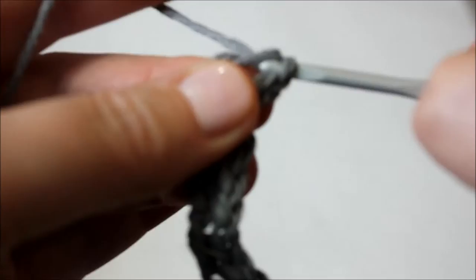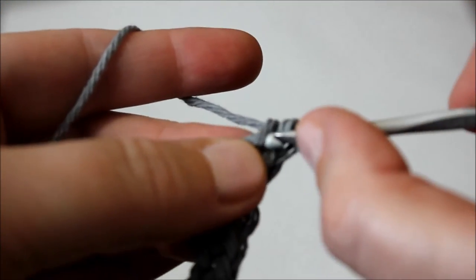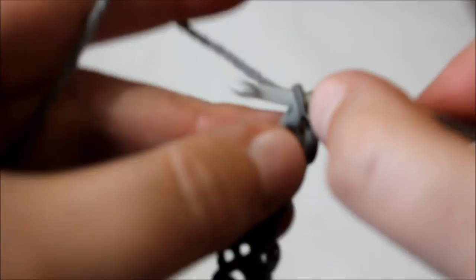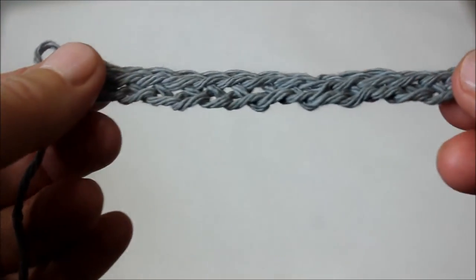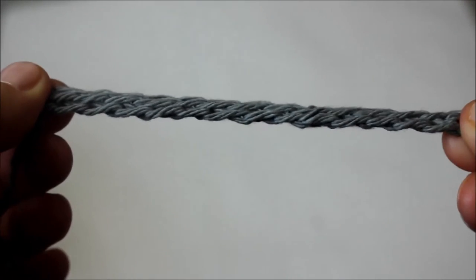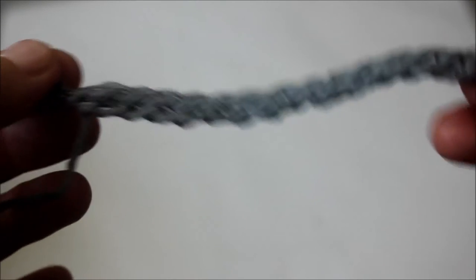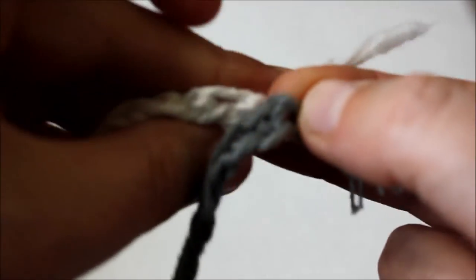I hope this tutorial gives you an idea how to start a dishcloth or a baby blanket with your project. Instead of chaining, you can use these methods. You can't see anything, it looks like a chain stitch. Here we go. So this is the second one.